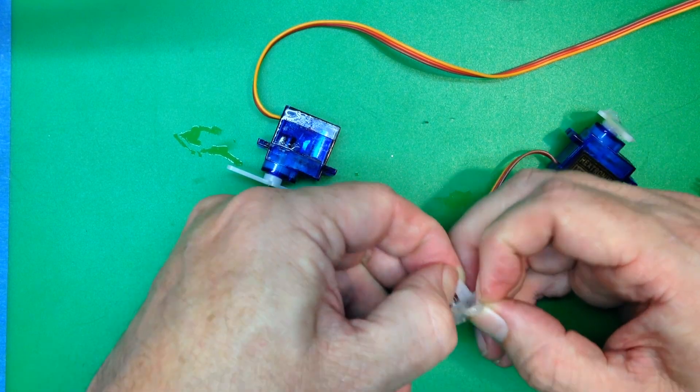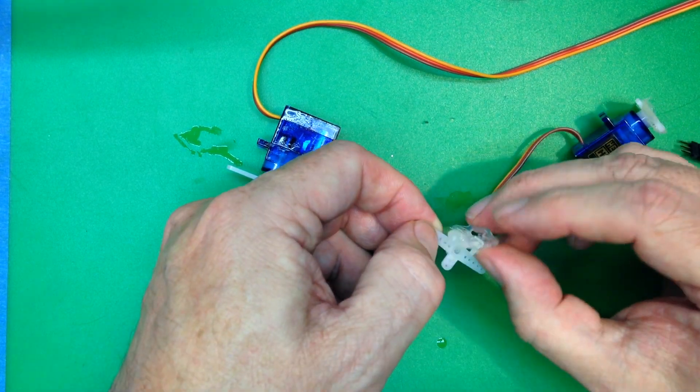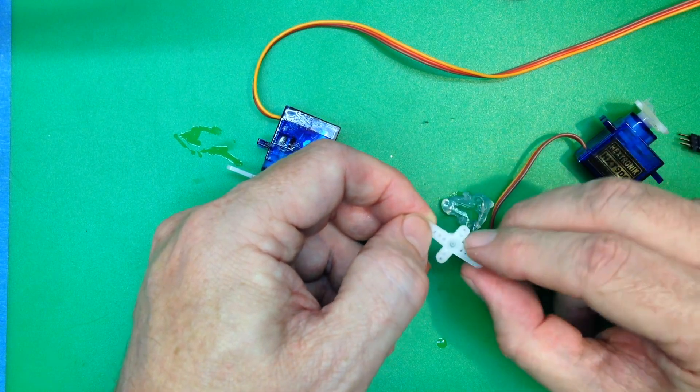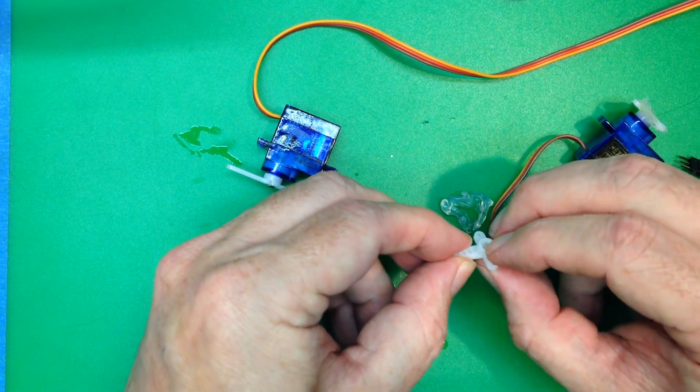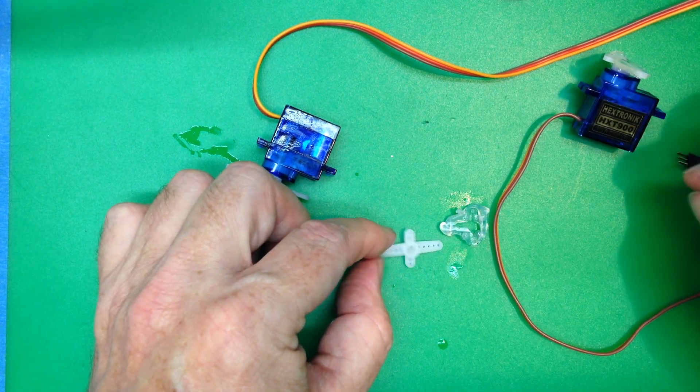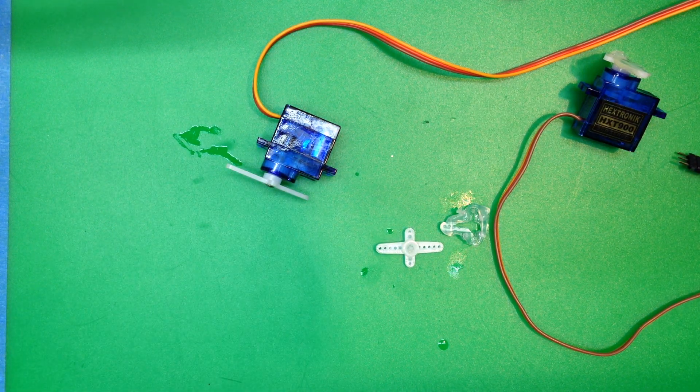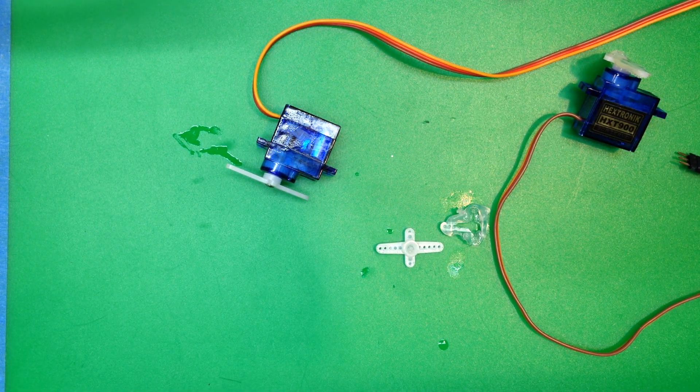And we'll probably have to get a needle or something to poke out the holes. But you can see that for the most part that just comes straight off. So if you have to get rid of hot glue off of a piece, that's an easy way to do it.